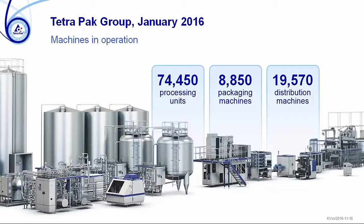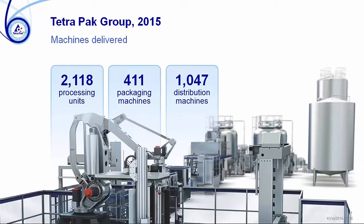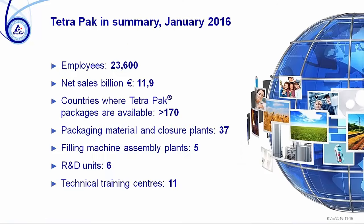Those machines come in an almost endless number of variants. The newest machines can produce up to 40,000 packages per hour. Delivery last year was 2,000 processing units, 400 packaging machines, and 1,000 distribution machines. The installed base is steadily growing by yearly sales, and not too many machines are taken out of operation. We are soon to be 24,000 employees. Net sales is 12 billion euros, with 37 packaging material closure plants, 5 filling machine assembly plants, 6 R&D units, and 11 technical training centers.